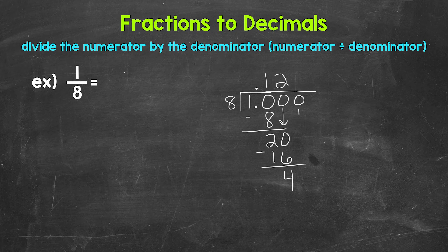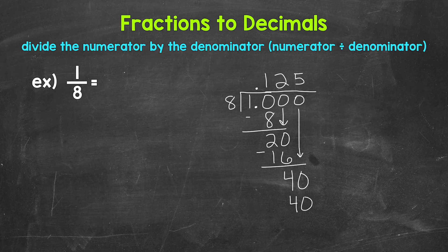Let's use another 0 in order to continue on that we can bring down. Now we have 40. 40 divided by 8 gives us 5, so we put 5 up here. Multiply: 5 times 8 is 40. Subtract: 40 minus 40 is 0. Now we have that clean cut 0 at the bottom and nothing else to bring down, so we are done.